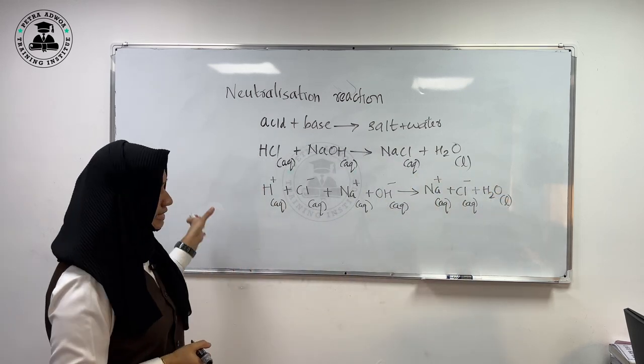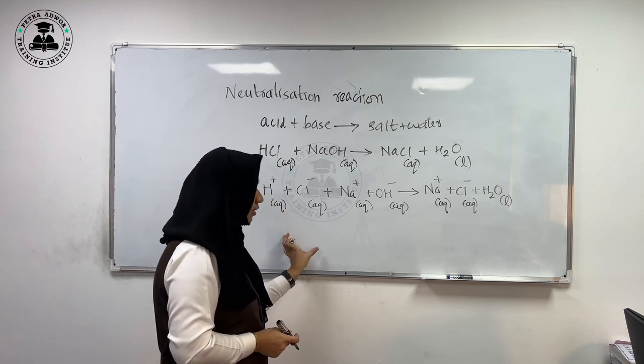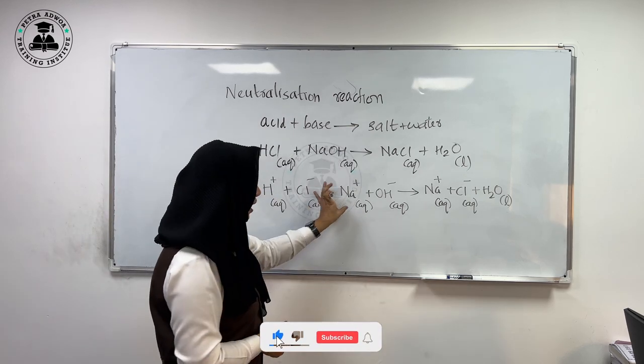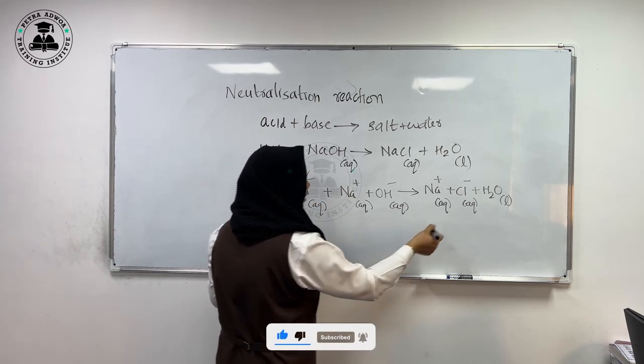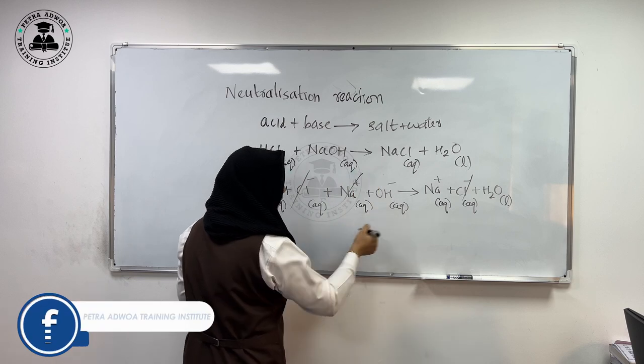Now we have to cancel out the common ions on both left hand side and right hand side of the equation. We are having sodium and Cl minus ions. So we can cancel out the chlorine ions and we can cancel out sodium ions.